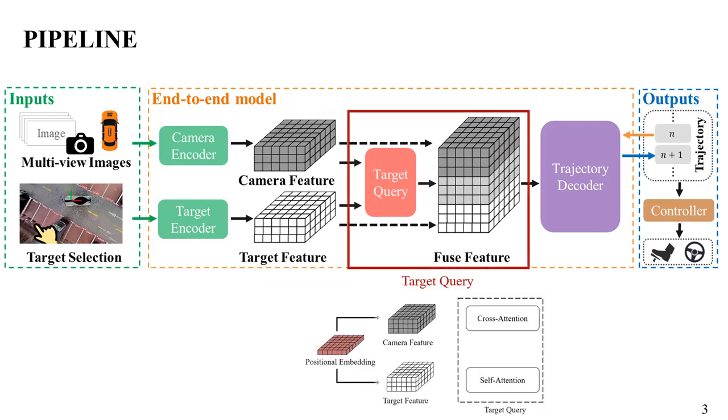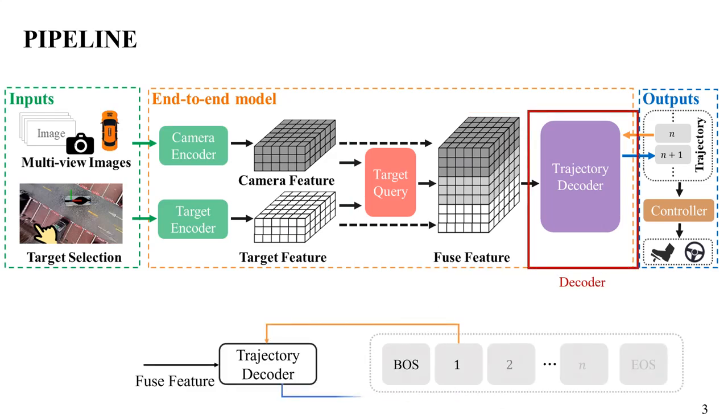For the target query, the same positional embedding is added to both the camera feature and the target feature, using attention for feature fusion. The decoder adopts a transformer-based method for autoregressive decoding of trajectory points.